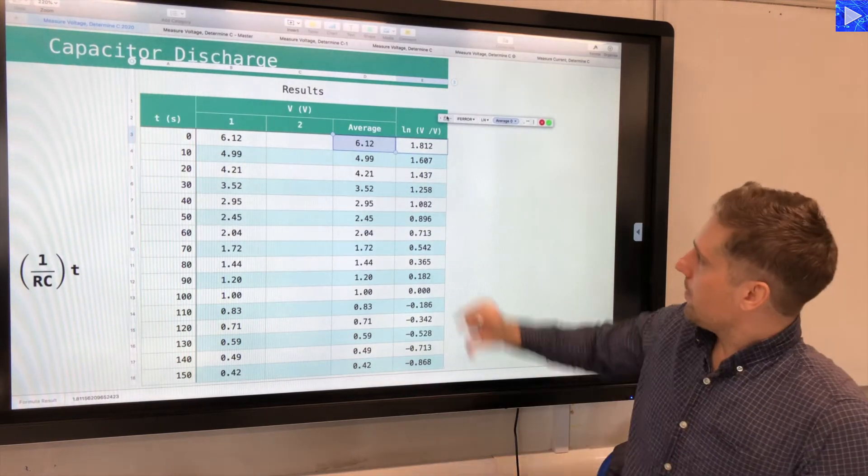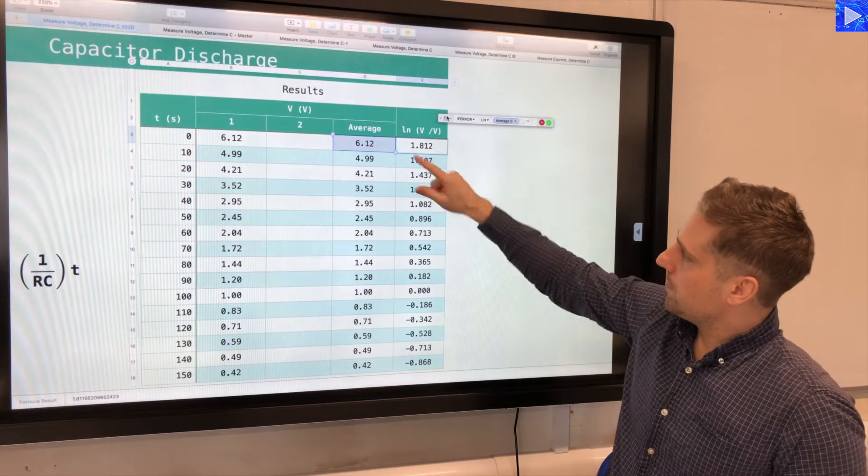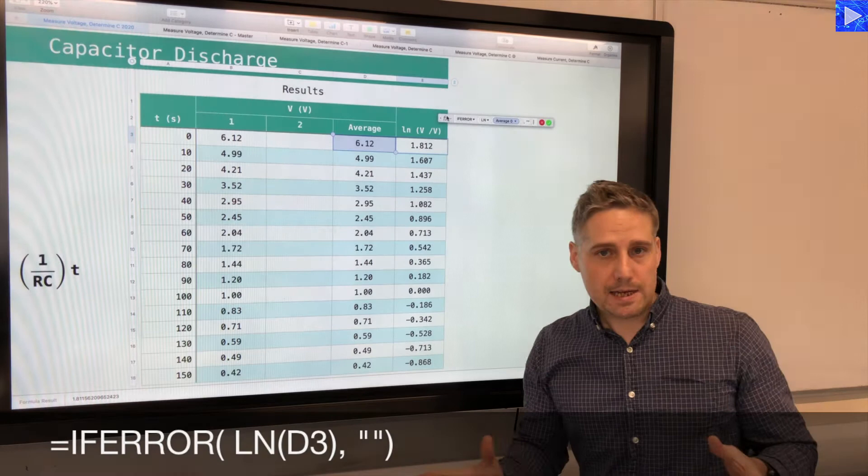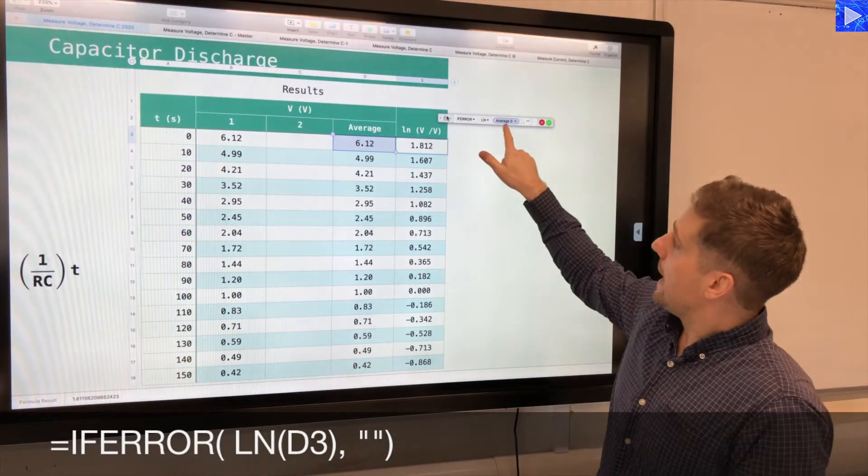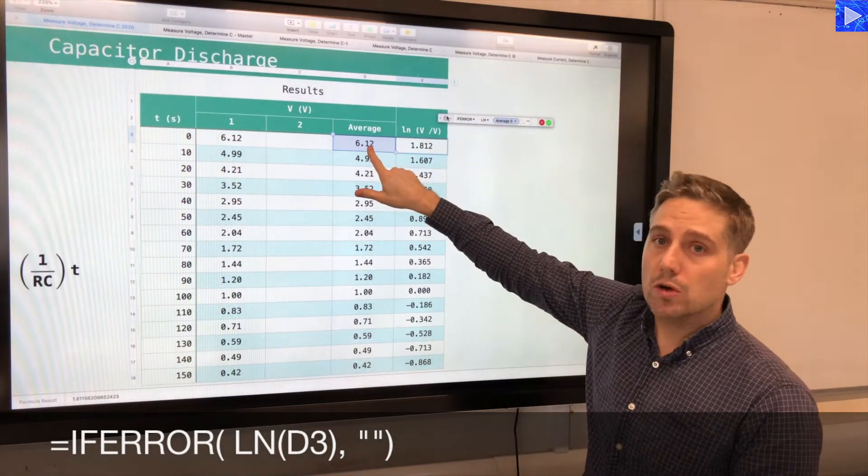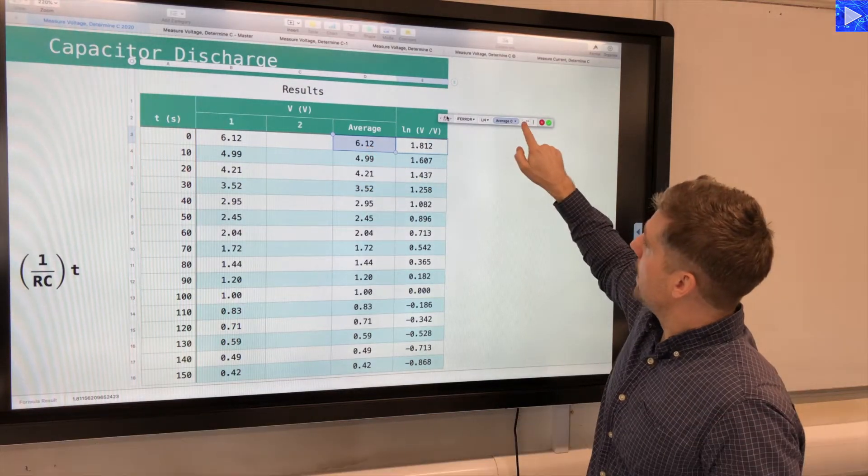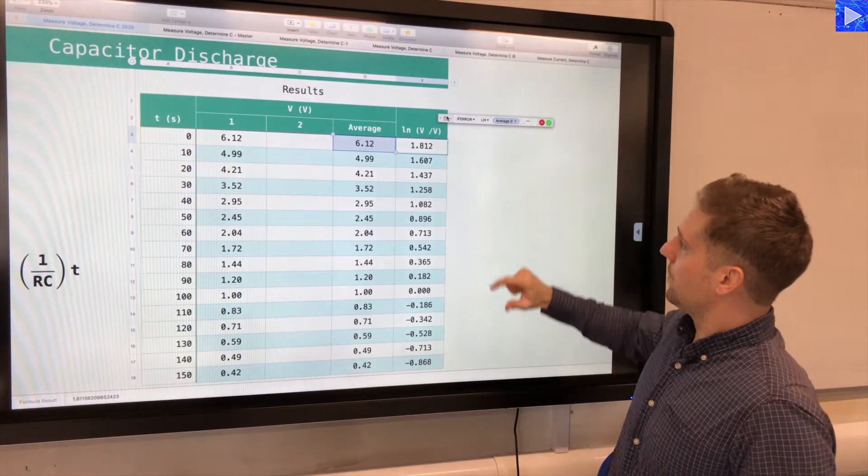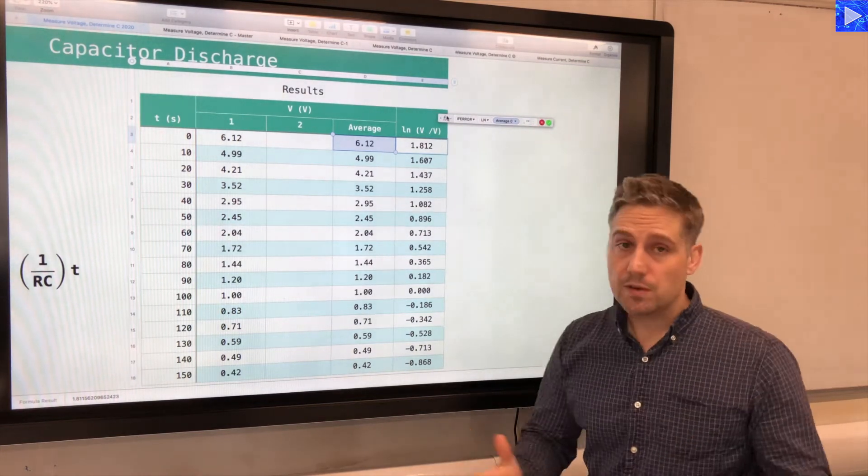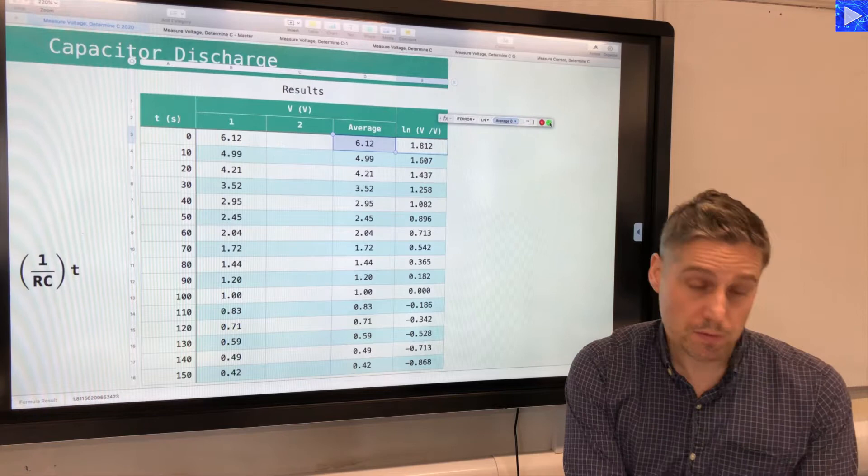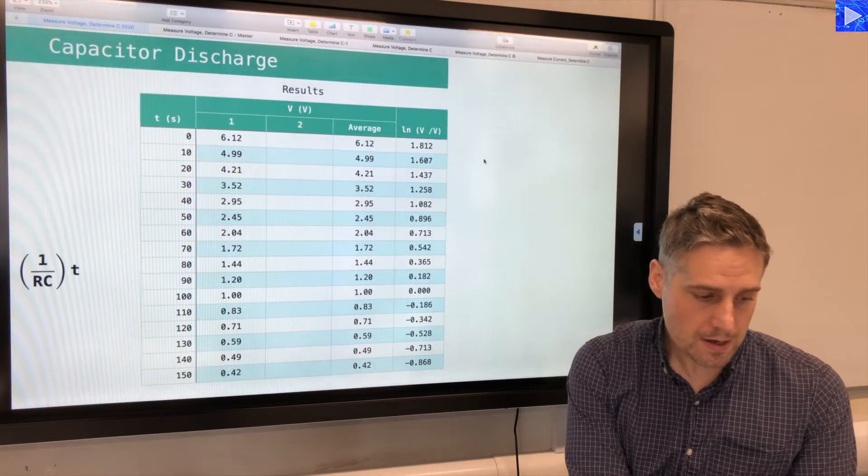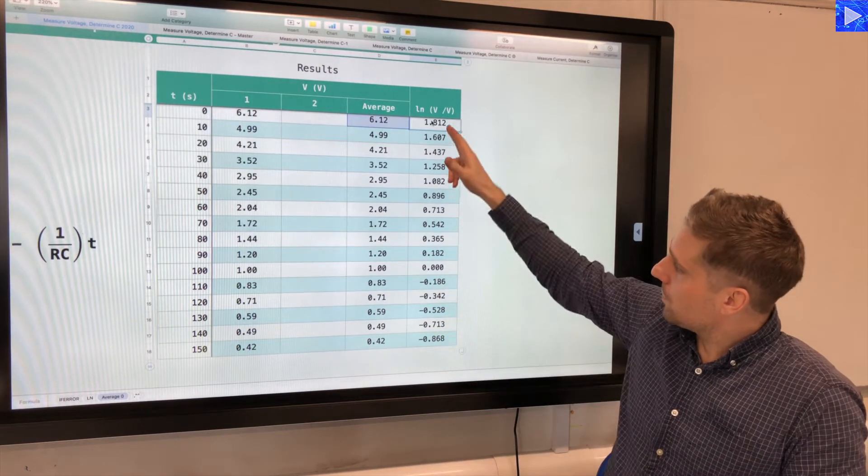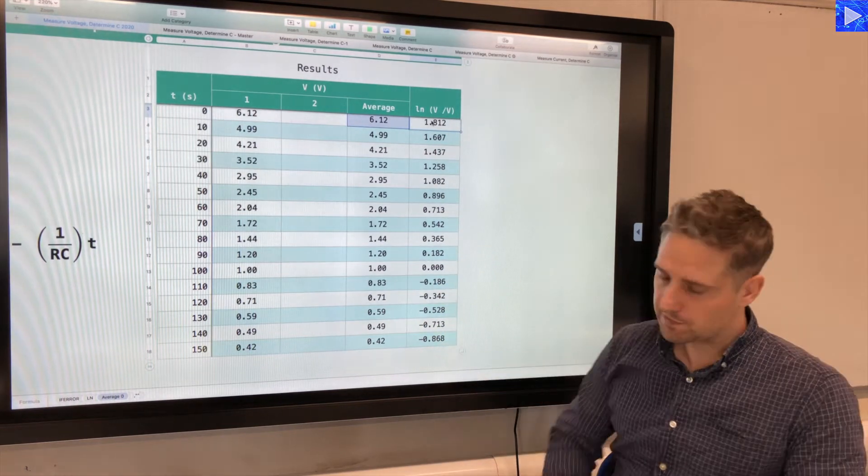Now, that's a straight line relationship between log v and t. So that's the reason we're taking the natural log of the potential difference. So let's have a look at that. Once again, I'm using an if error to prevent there being an error shown here when there's no data. There is a built-in function, ln, which is natural log, and I'm taking the natural log of the average potential difference here. If there was an error, it would just display a blank rather than a zero. So it's a fairly straightforward formula from the point of view of a spreadsheet.